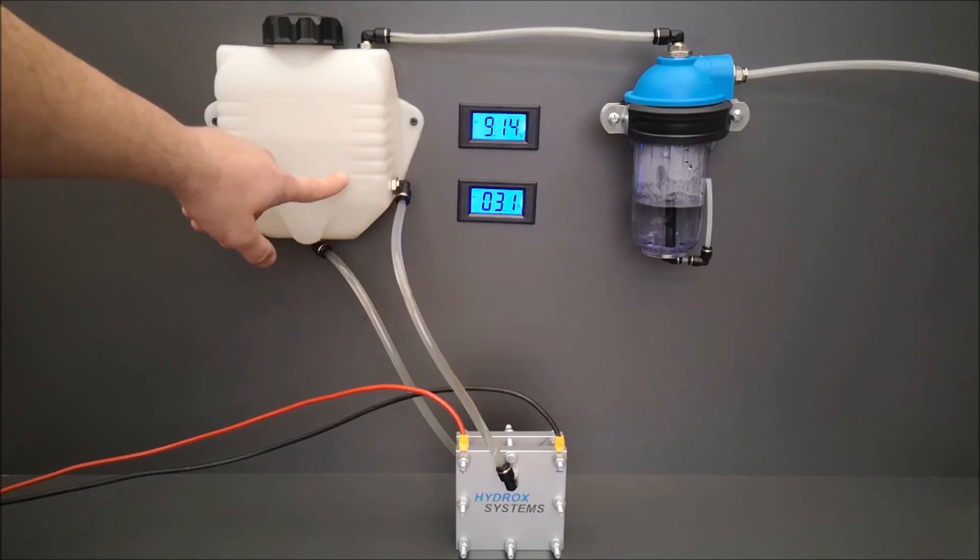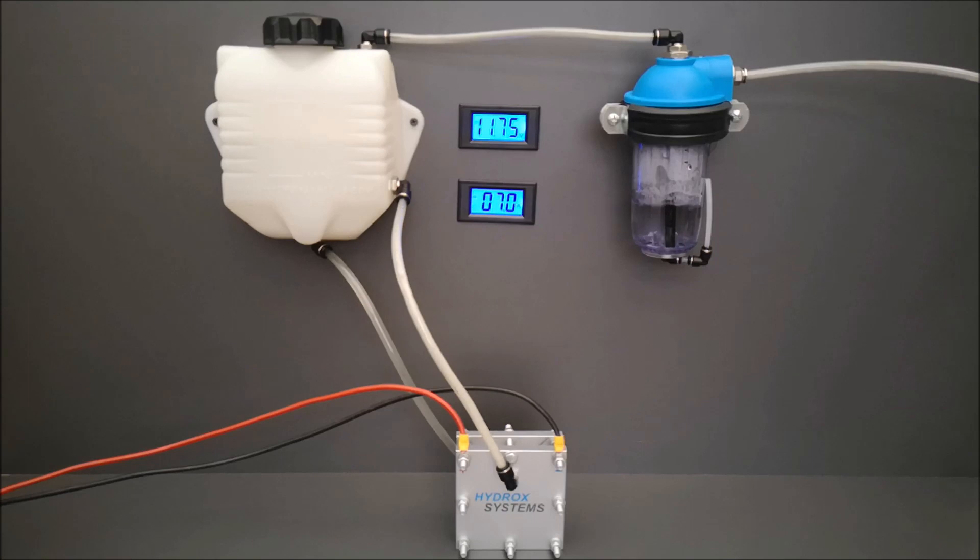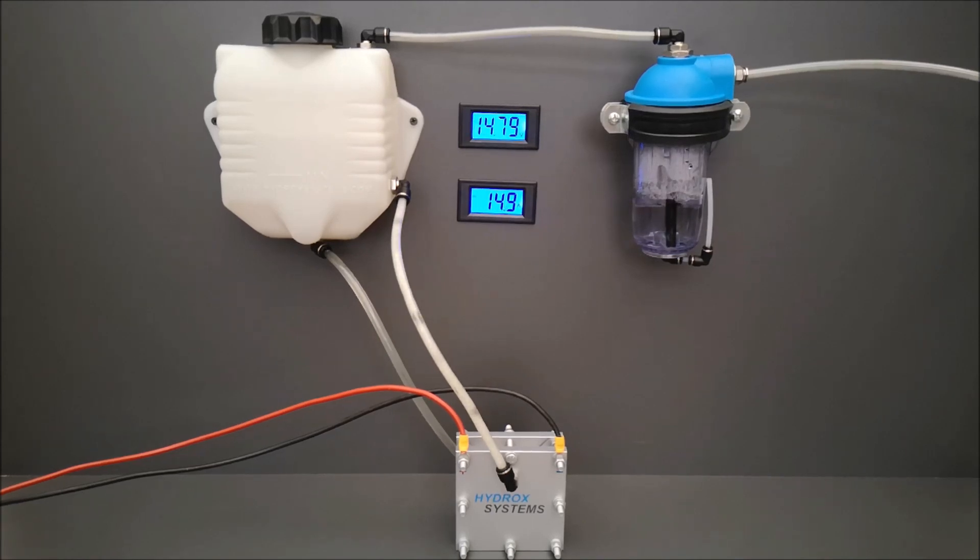Okay, we increase the voltage to 13 volts, almost 14, 14.79 volts at the moment. We have 15 amperes and now you can see how it's producing gas. This is a very compact dry cell.